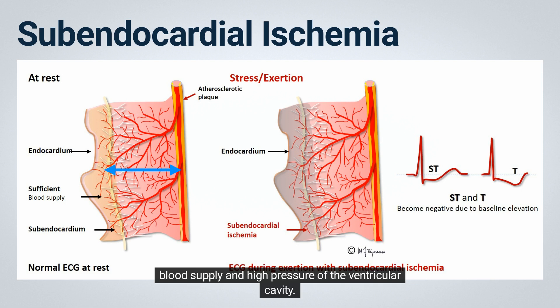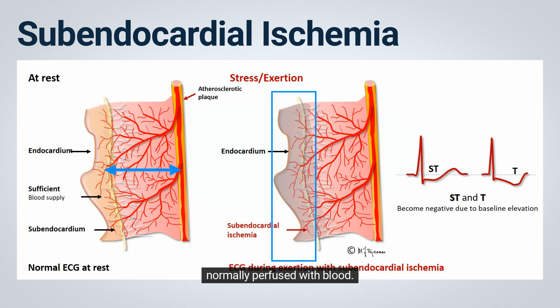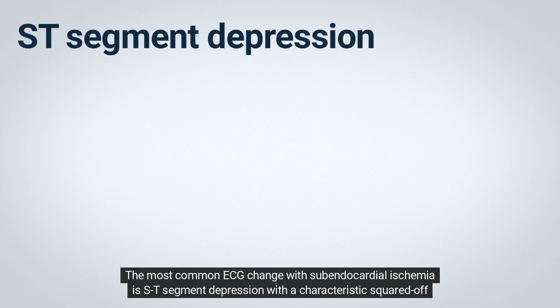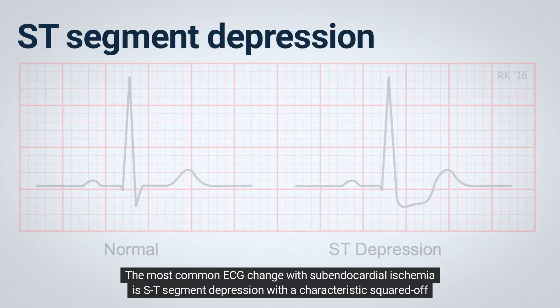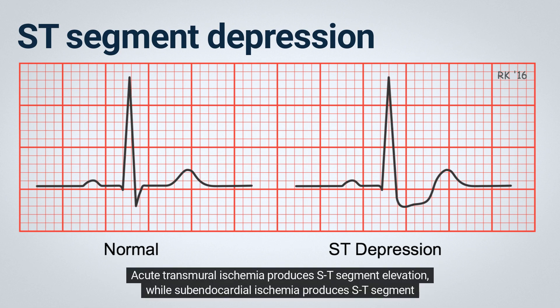This inner layer of the ventricle can become ischemic while the outer layer or epicardium remains normally perfused with blood. The most common ECG change with subendocardial ischemia is ST segment depression with a characteristic squared-off shape.